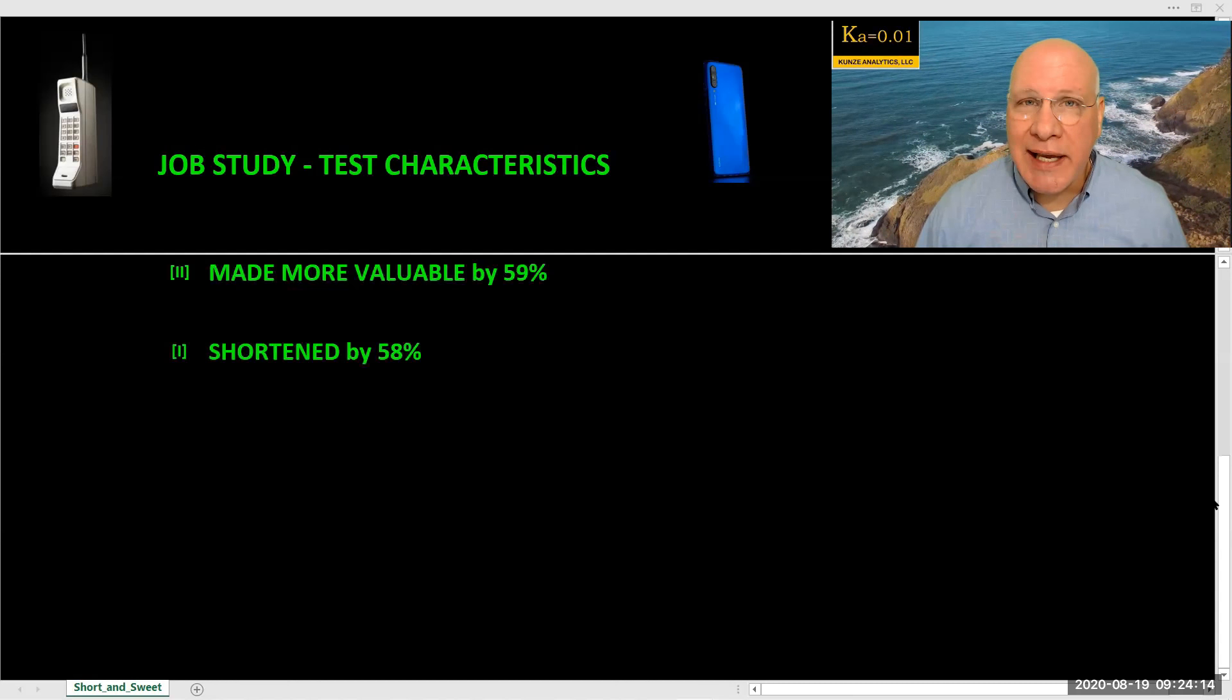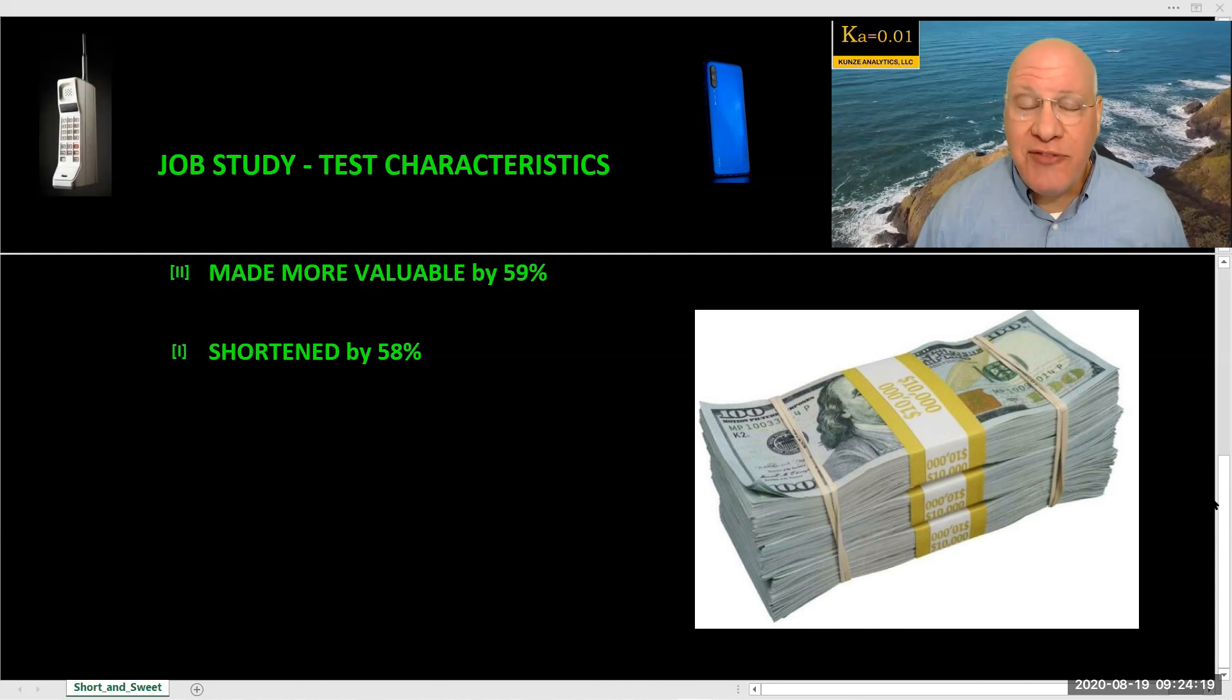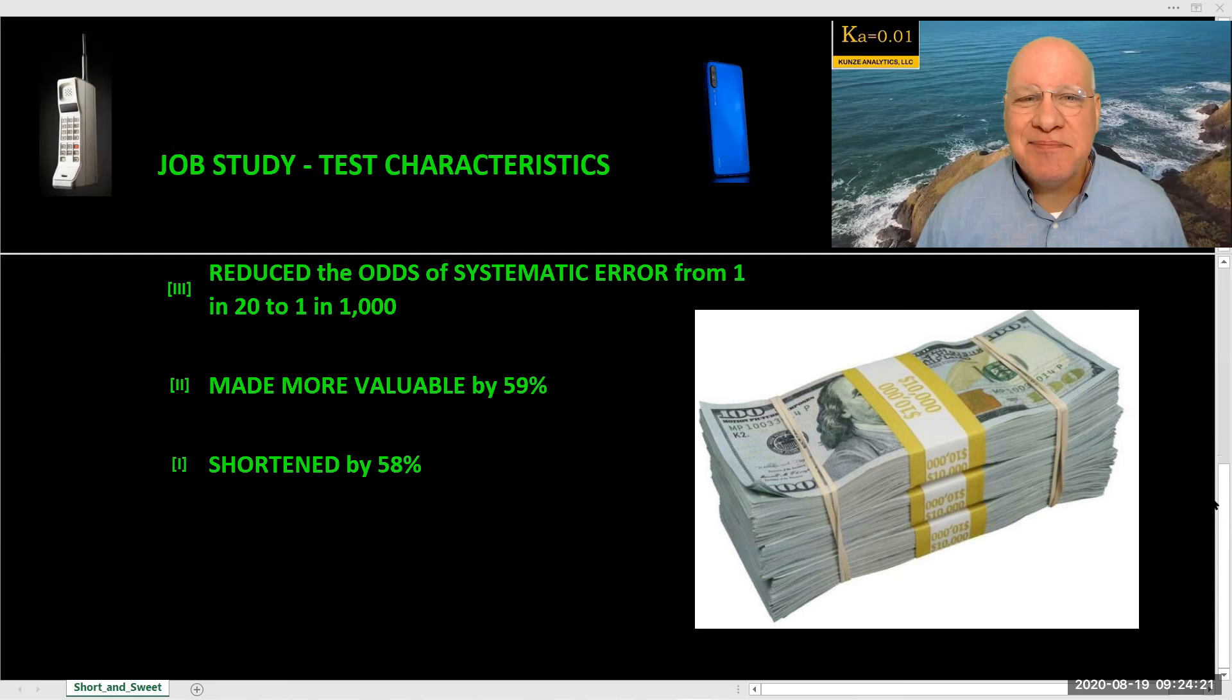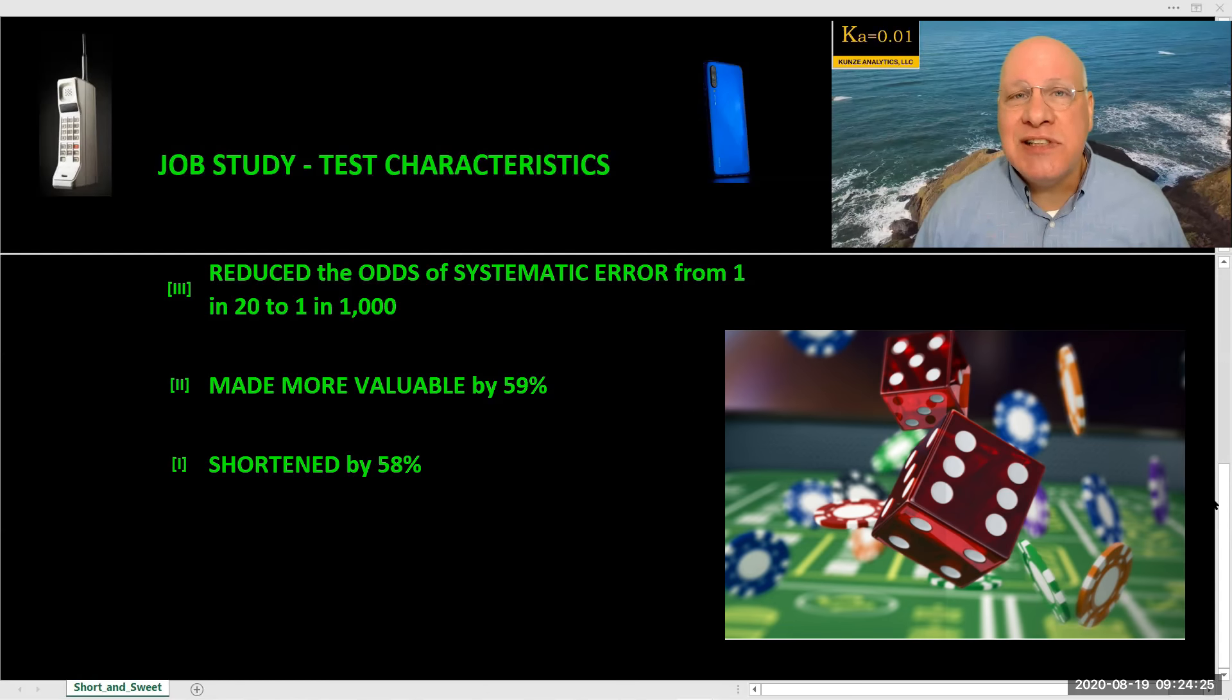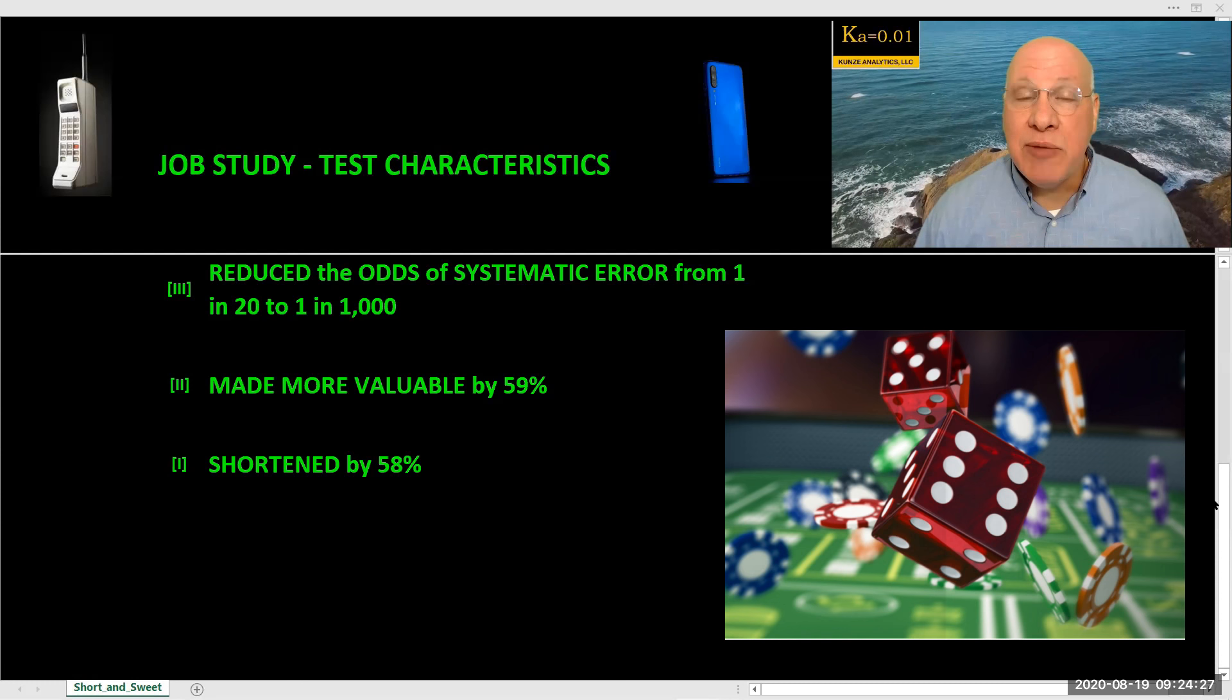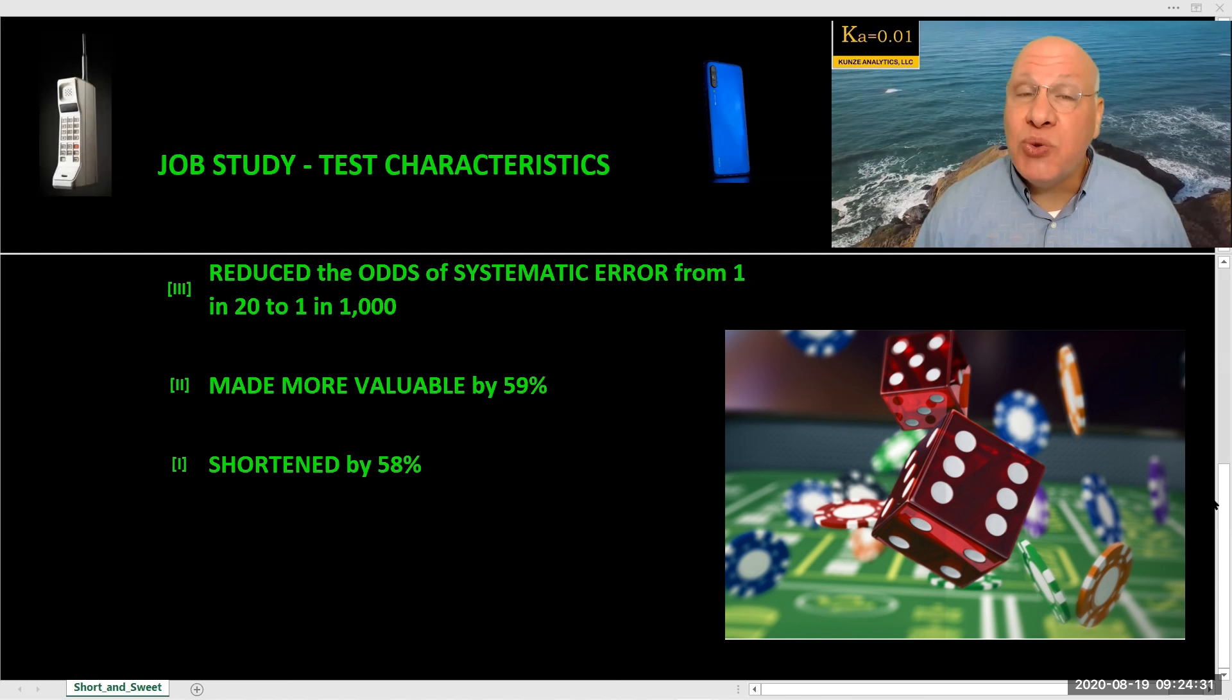Secondly, we made the test more valuable by 59%. And then finally, we reduced the odds of systematic error in prediction from 1 in 20 to 1 in 1,000.